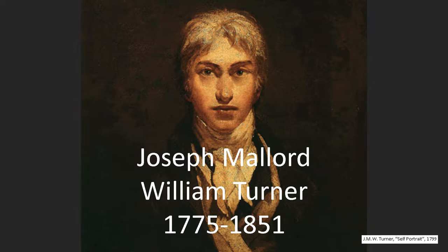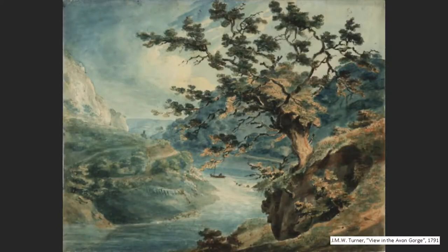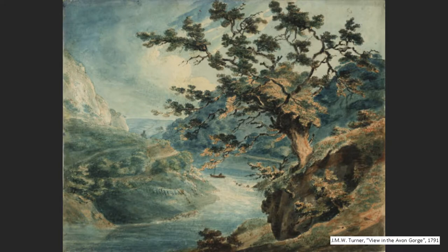His mother, Mary, came from a line of prosperous butchers and shopkeepers. At the age of 14, J.M.W. Turner entered the Royal Academy, where he honed his artistic talents and worked on a variety of mediums, including plasters, watercolors, engravings, sketches, and oil on canvas. He was fascinated with landscape work from an early age.